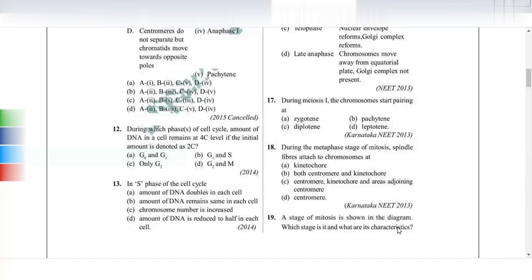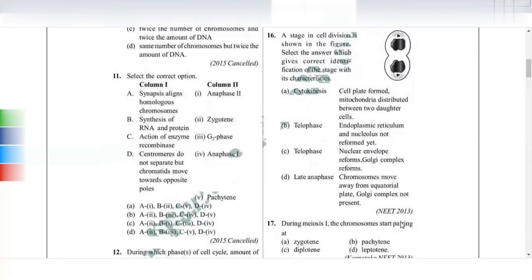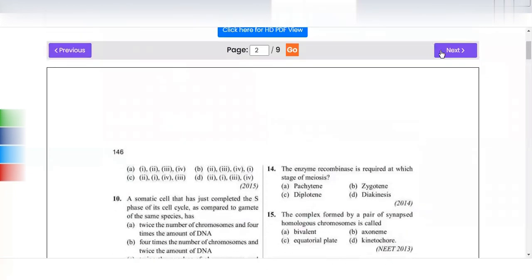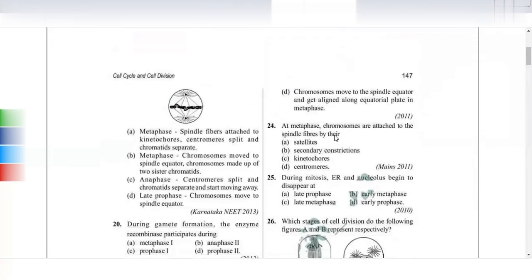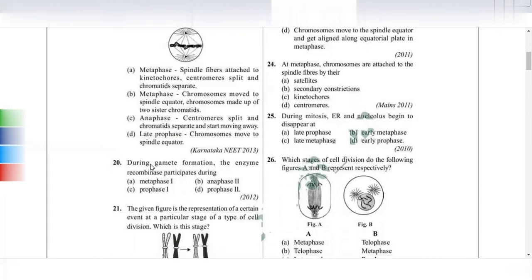A stage of mitosis is shown in the diagram. Looking at this picture, it's obviously metaphase with equatorial plate arrangement. The right answer shows spindle fibers attached to the kinetochore. Centromere splits in anaphase, not metaphase, so that option is wrong. Chromosomes move to the spindle equator and are made up of two sister chromatids, so option B is right.